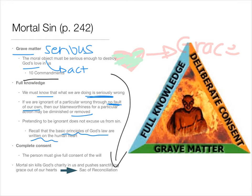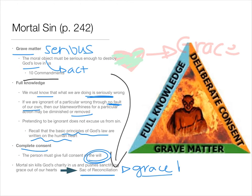Remember the basic principles of God's law — those first principles or goods that St. Thomas Aquinas talked about are written on the human heart, so you can't argue that you're ignorant. Finally, complete consent: the person must give full consent of the will. For example, if someone breaks into my house and puts a gun to my head and I have to defend myself by killing him, I didn't have full consent of my will — I didn't will that that person would die; I'm only willing that I don't die. For it to be fully blameworthy, you have to have full consent of the will. Mortal sin kills God's charity or love in us and pushes sanctifying grace out of our hearts, and the only way this soul sickness can be healed is with the grace of the sacrament of reconciliation.